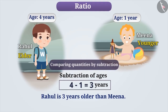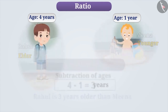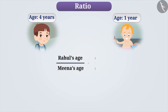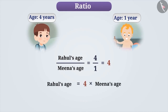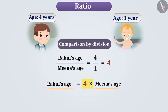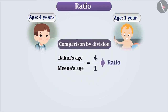We can also compare their ages using another method. If we divide Rahul's age by Meena's age, we get 4 as the result. This shows that Rahul's age is 4 times the age of Meena. Here, we have compared two quantities based on how many times one quantity is of the other. The method in which we compare two quantities in terms of how many times is known as comparison by division. In this example, year is used as the unit of age, so the units of both quantities are the same. When units of two quantities are the same, the comparison by division is known as ratio.